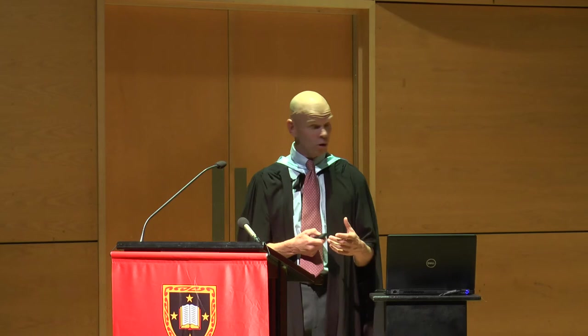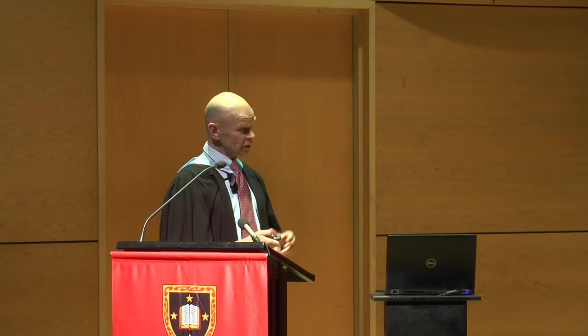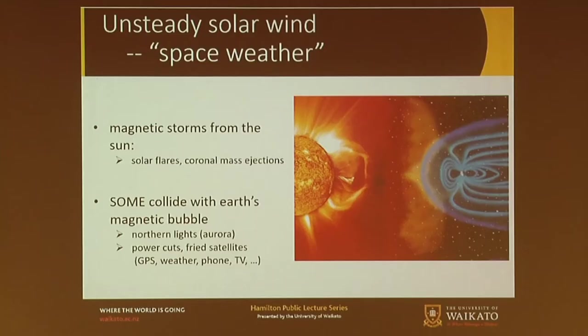Coming back to that unsteadiness of the wind — the fact that it's not just a nice smooth flow forever. Like our own atmosphere, we don't have a steady flow all the time either. We have storms, fast winds and slow winds, hurricanes and tornadoes. There are analogues of all of those things happening in space, in between the planets.